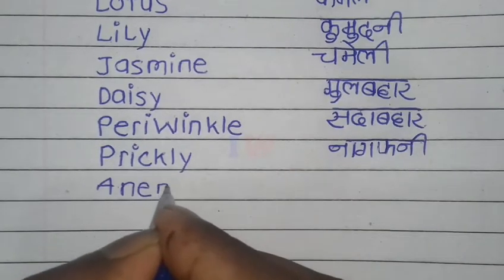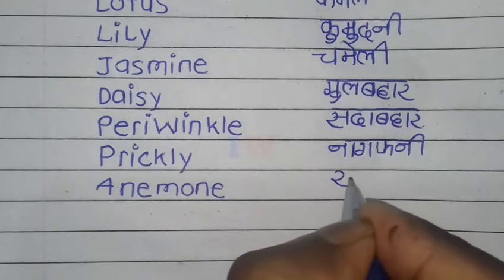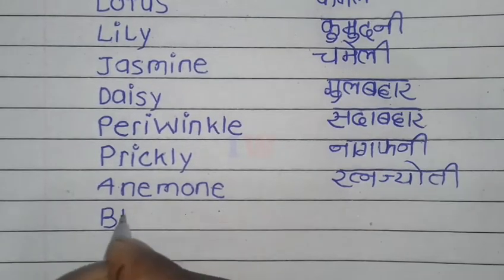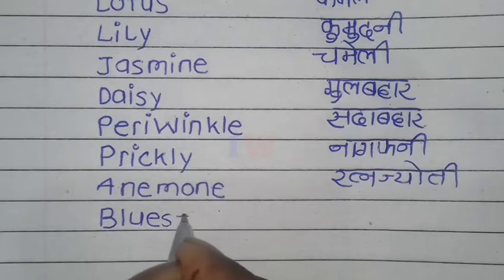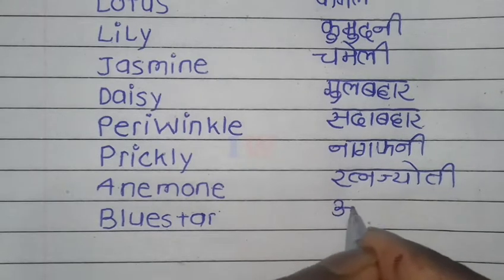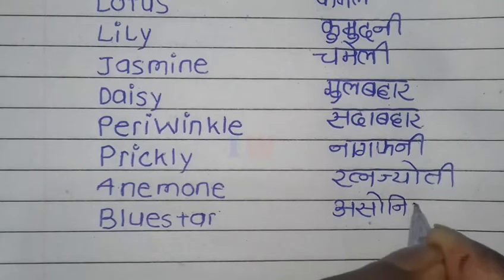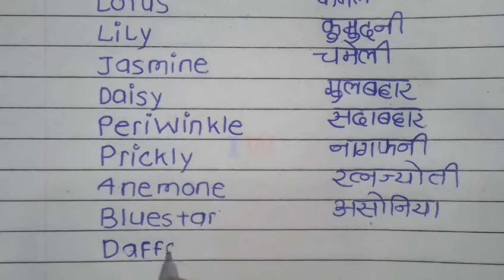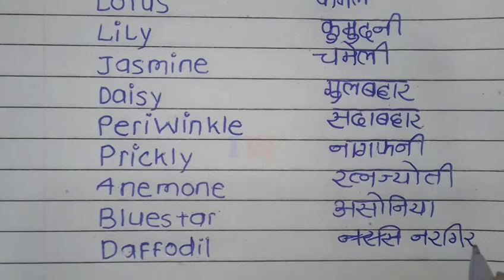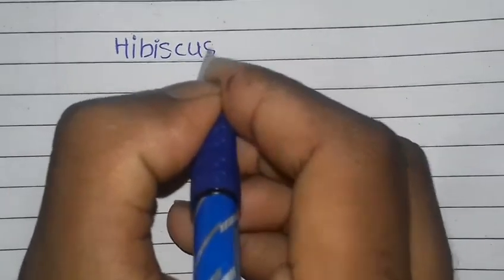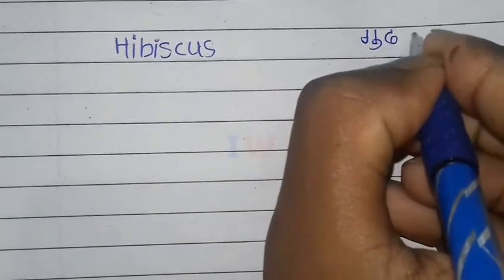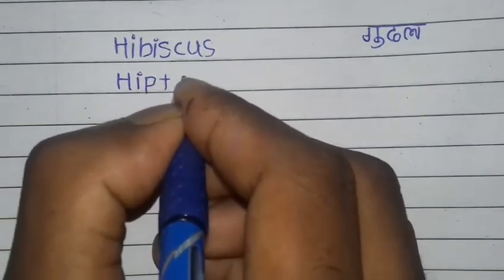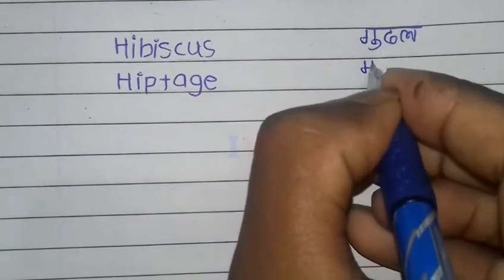A-N-E-M-O-N-E, Anemone, Ratna Jyoti. B-L-U-E-S-T-A-R, Blue Star, Asonia. D-A-F-F-O-D-I-L, Daffodil, Nargis. H-I-B-I-S-C-U-S, Hibiscus, Gudhal. H-I-P-T-A-G-E, Hiptage.